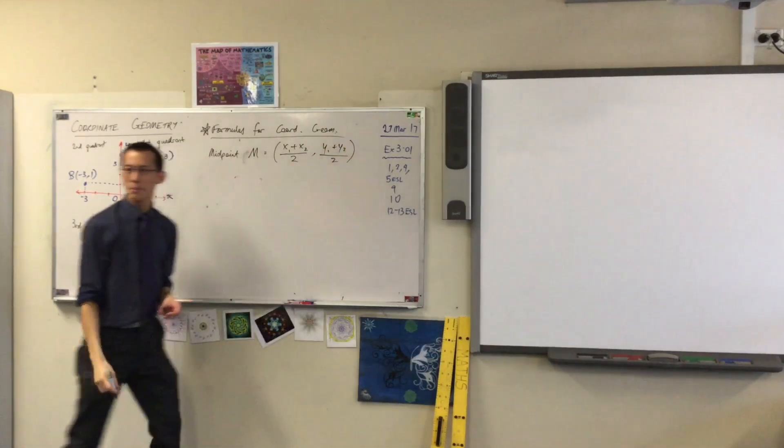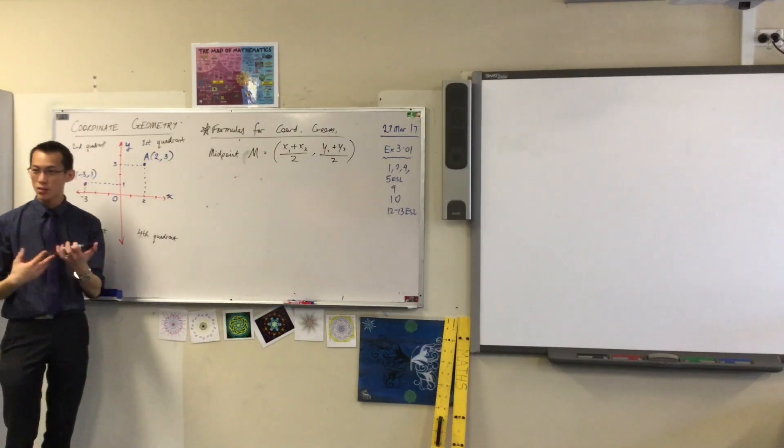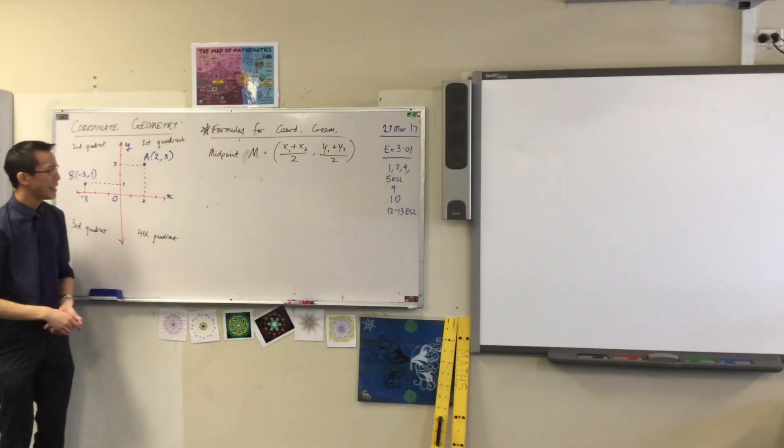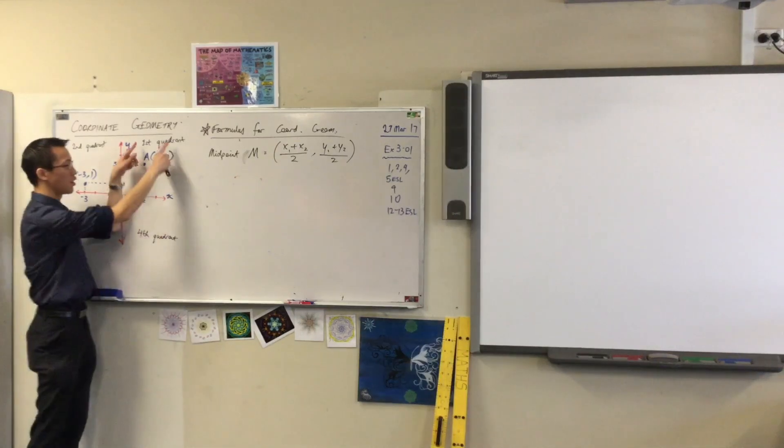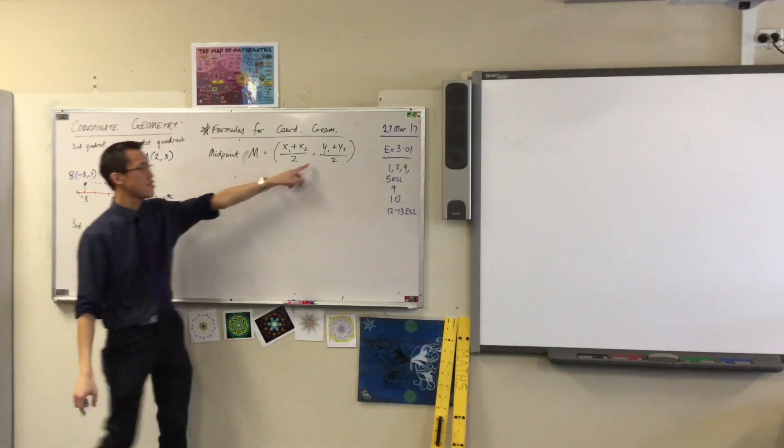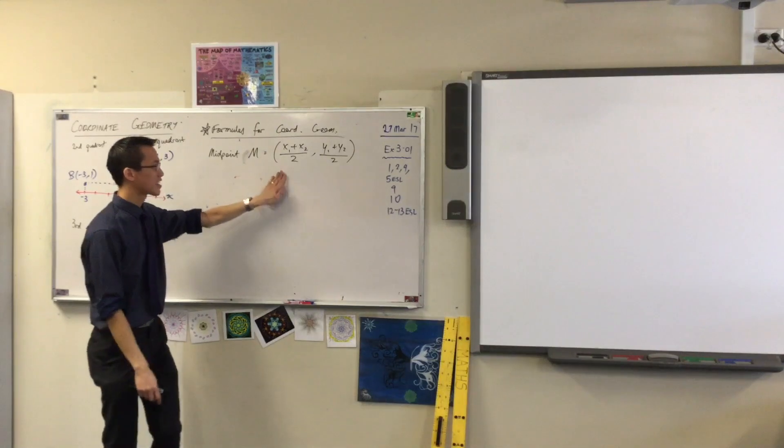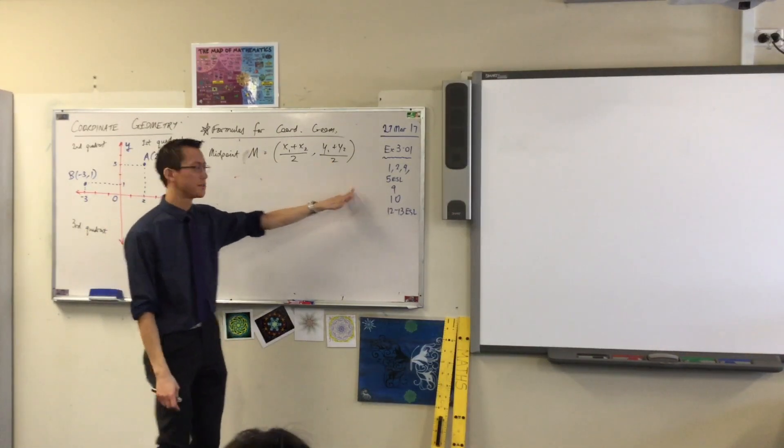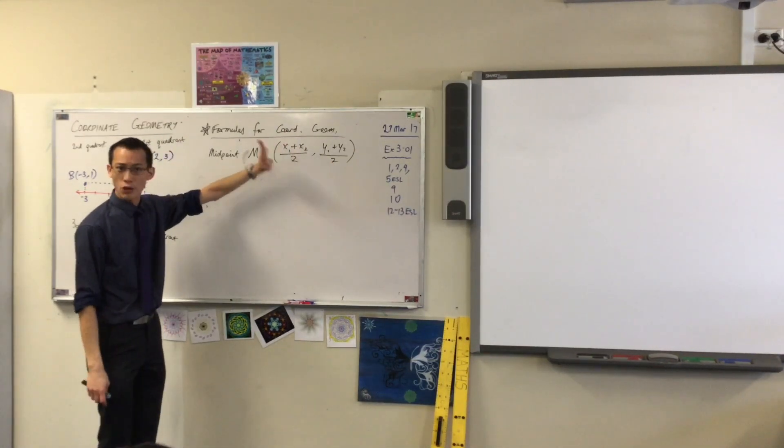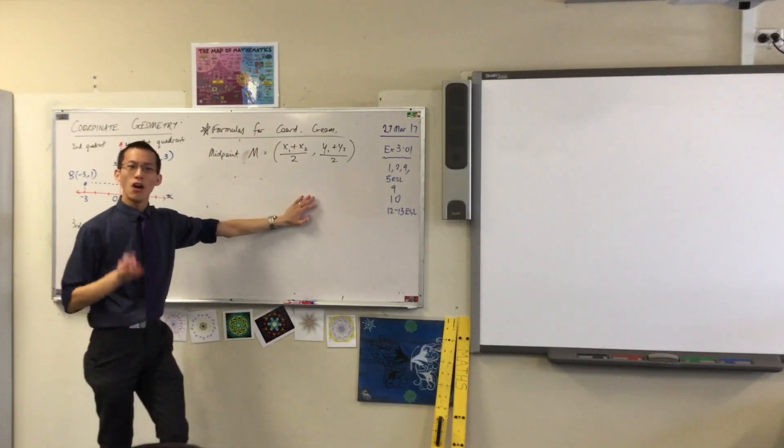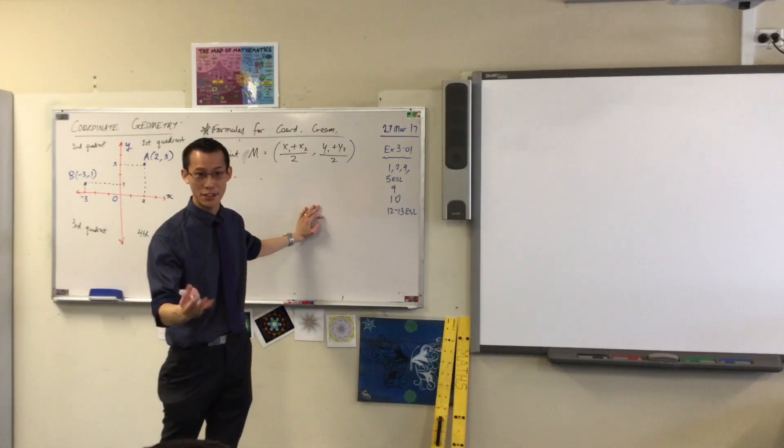So here's the midpoint formula, and you can see, because what you're going to get out of this is a point, it's formatted like a point. You've got your brackets around the edges, you've got a comma in the middle, there's an x coordinate and a y coordinate. For each one, you're adding them and then you're dividing by two. All you're doing is you're working out the average.